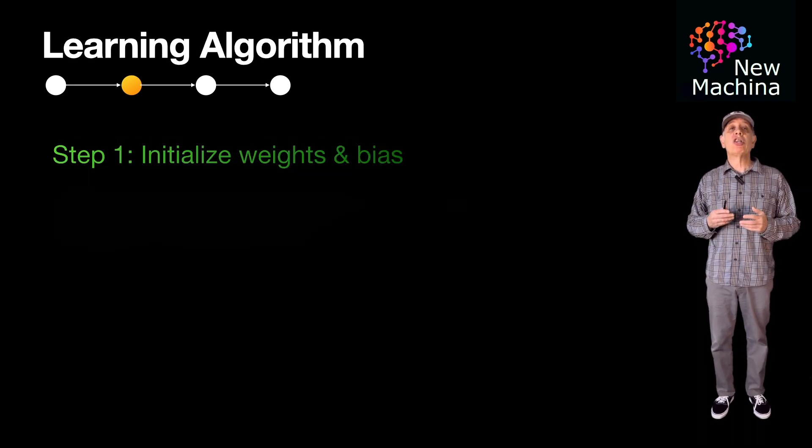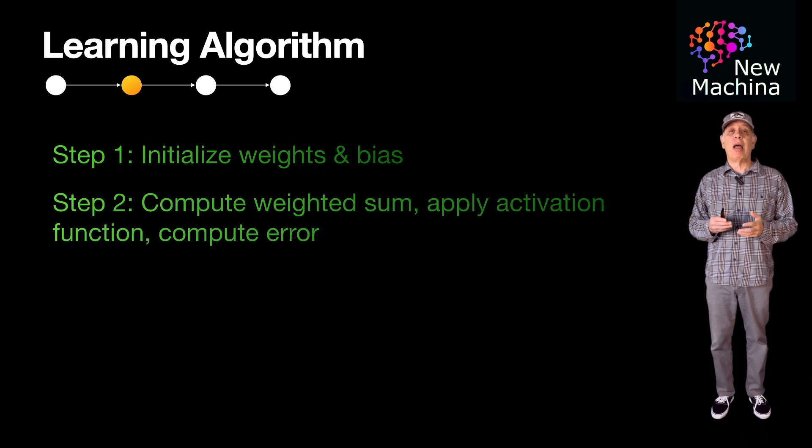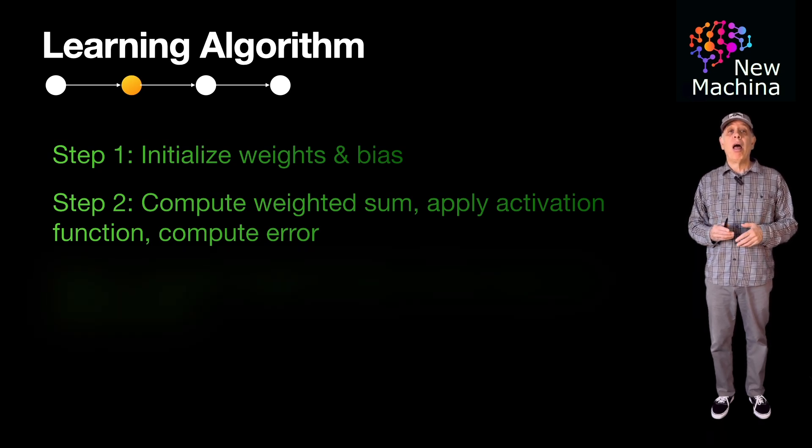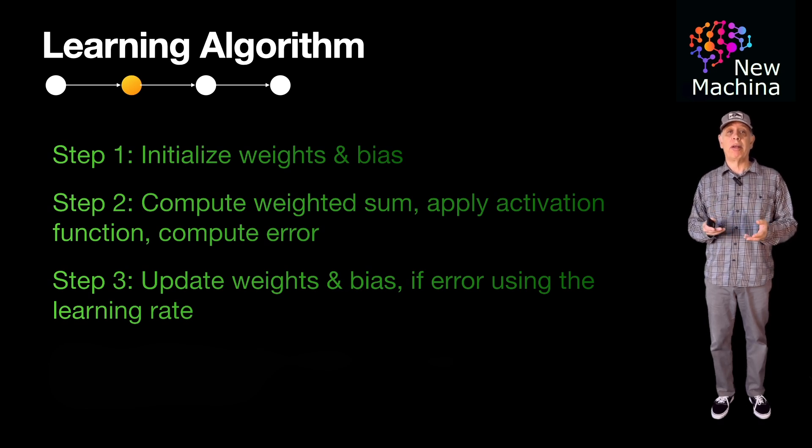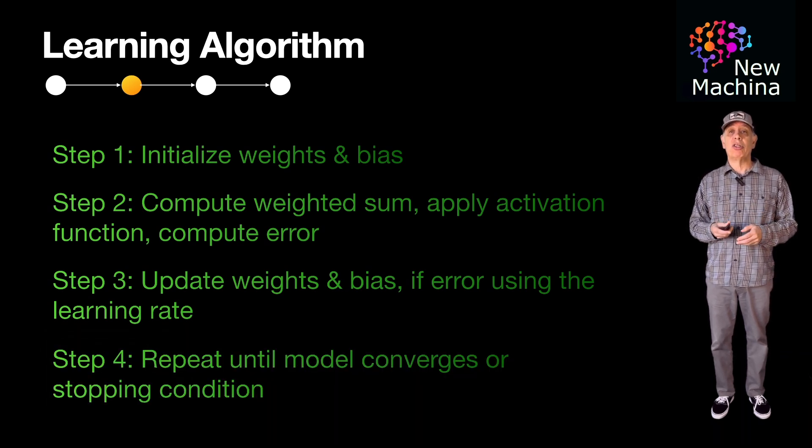Step 1. Initialize the weights and bias. Step 2. For each training example, compute the weighted sum, apply the activation function, and compute the error. Step 3. Update the weights and bias, if there's any error, using the learning rate. Step 4. Repeat until the model converges or a stopping condition is met.